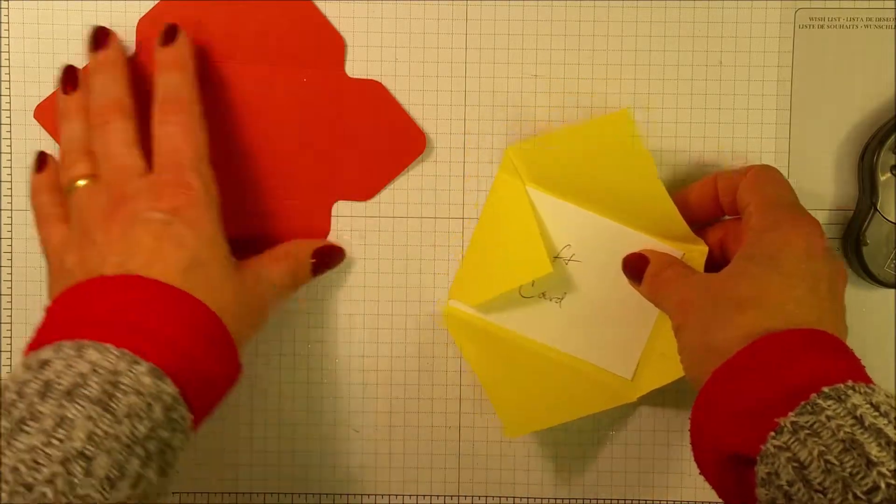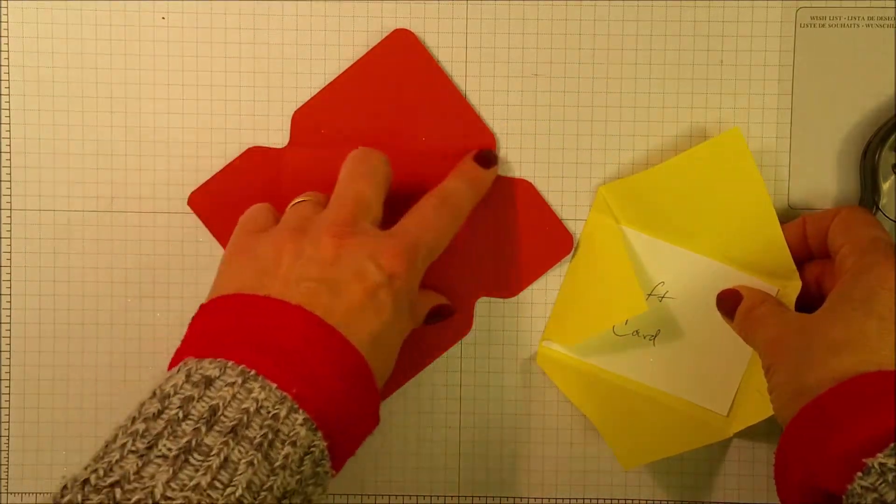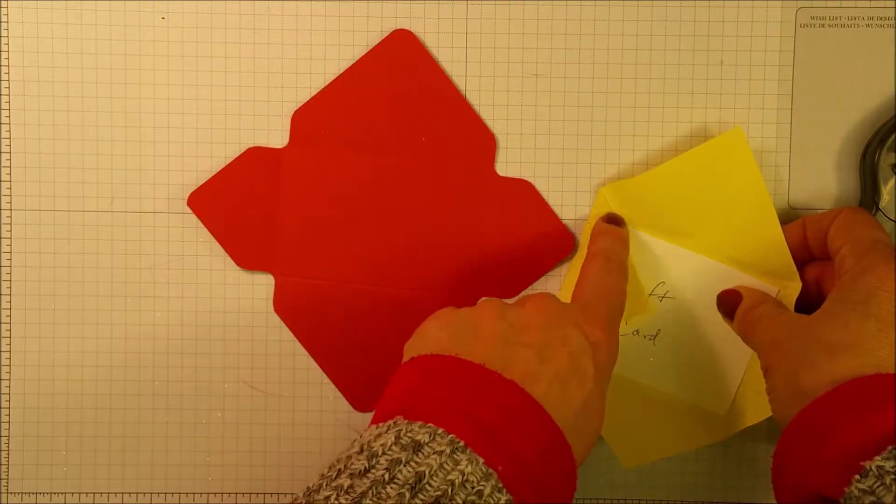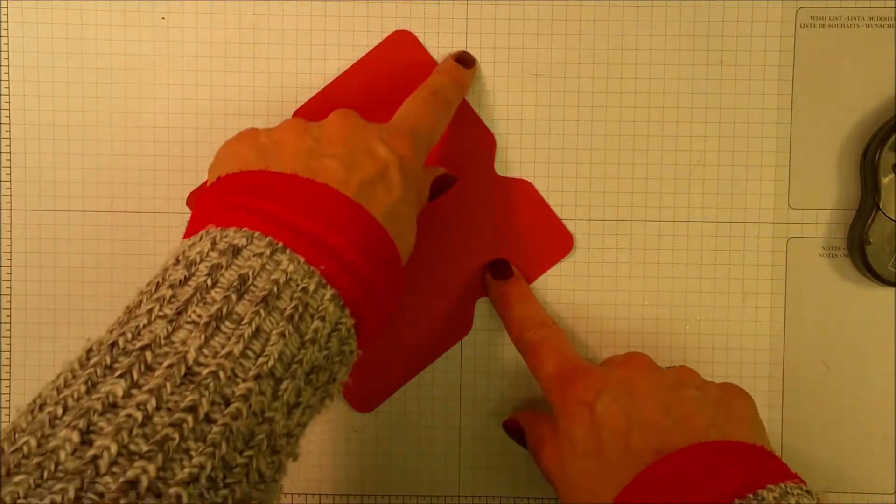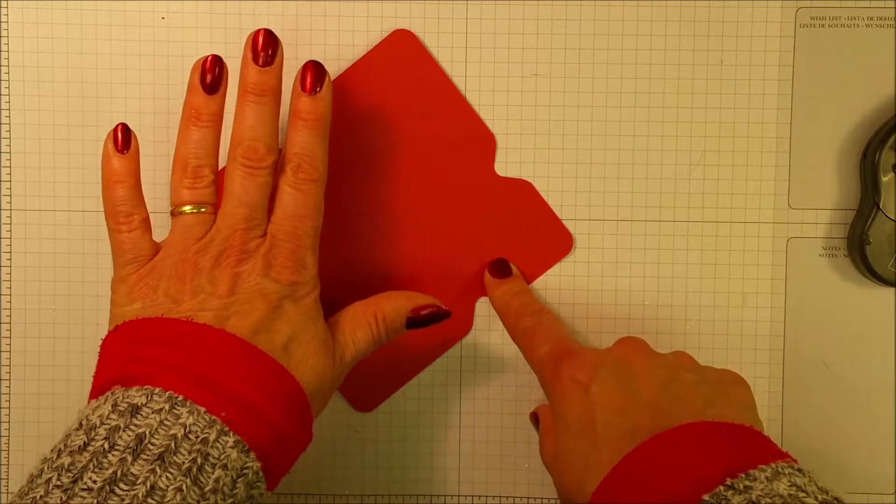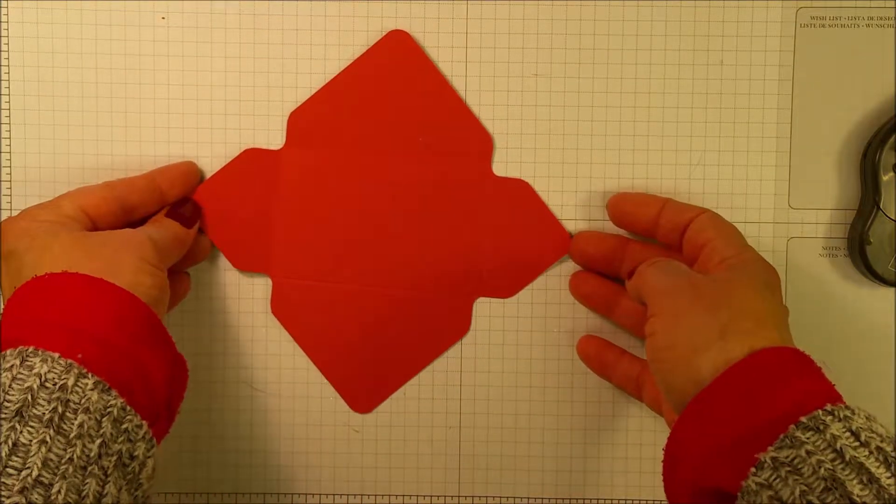So when you make your project, what you want to do is to cut out a notch. So you can get rid of some of the bulk of the paper that's there, and then you can make it pretty by rounding the corners. And I have the perfect tool for doing that, and I'll show it to you in just a minute.